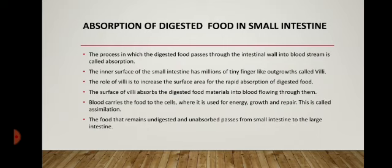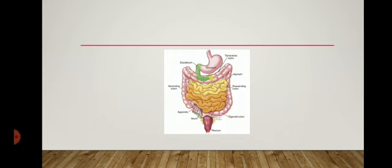A part of the food we eat cannot be digested in our body, such as roughage or dietary fiber. This undigested food cannot be absorbed in the small intestine and passes from the small intestine to the large intestine. The small intestine actually has three parts: the duodenum, jejunum, and ileum.